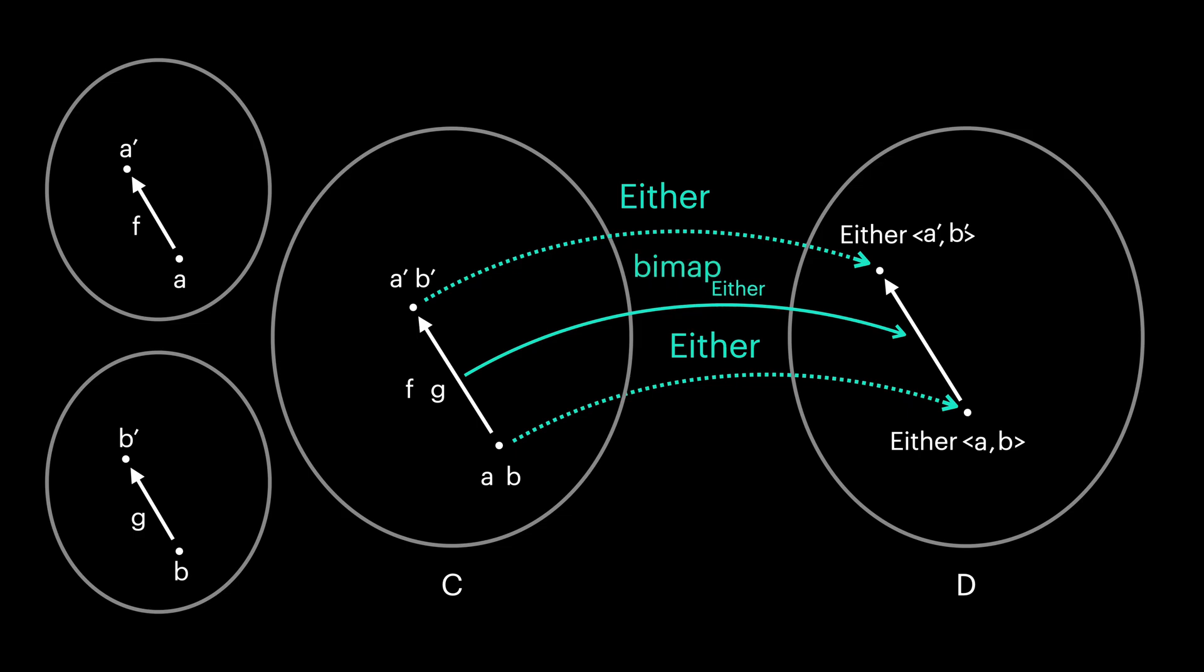This is exactly what bimap does for us. Bimap receives two functions F and G and returns a new function in the context of either. Do you see it? Bifunctor is exactly same as functor. We are just looking closer at our either structure and found that it is constructed of not just one thing, but two things.